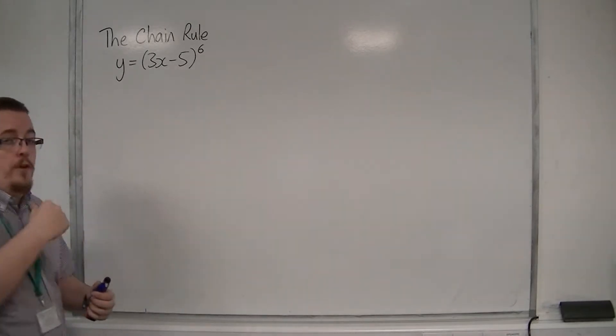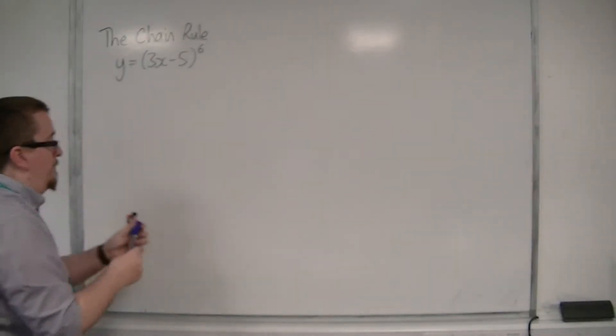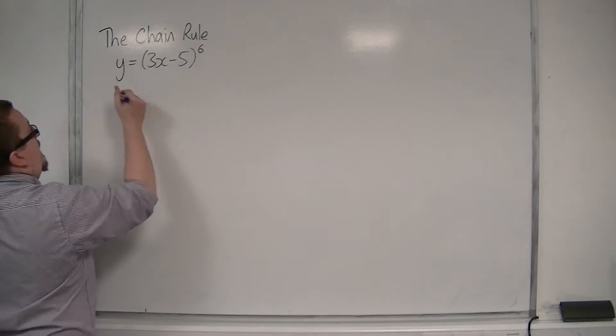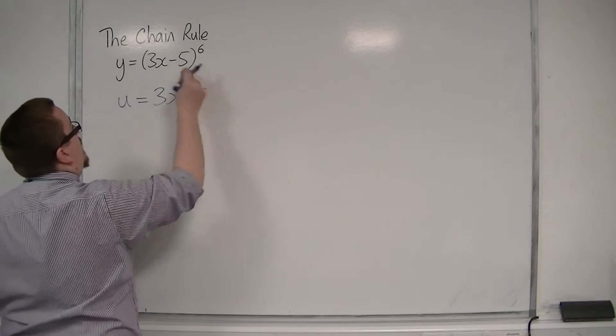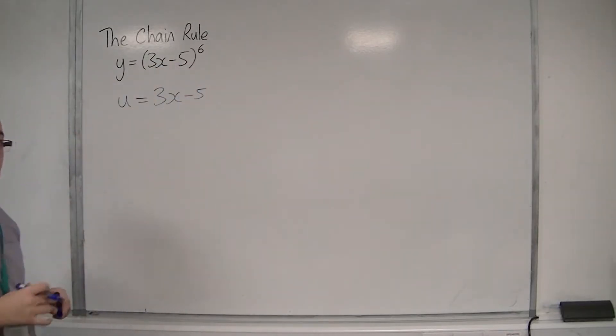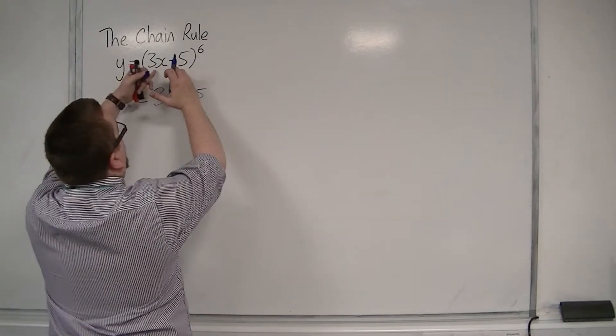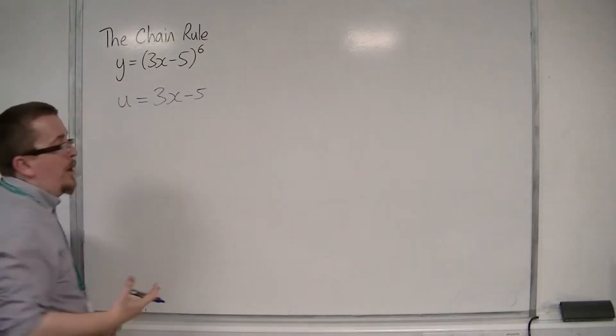So what we do is we set up a substitution. We're going to let u be the 3x minus 5, the function that is within the other function. So we've got one function, this 3x minus 5, within x to the power of 6.